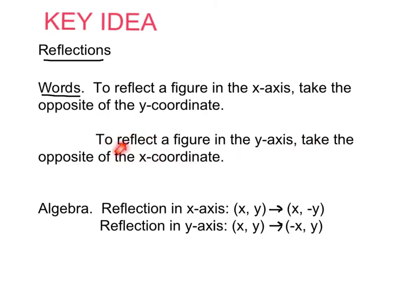To reflect a figure in the y-axis, take the opposite of the x-coordinate. So if you have a point (x, y), the reflected point becomes (−x, y). For example, if I have a point at (2, 3) and reflect it over the y-axis, it becomes (−2, 3).